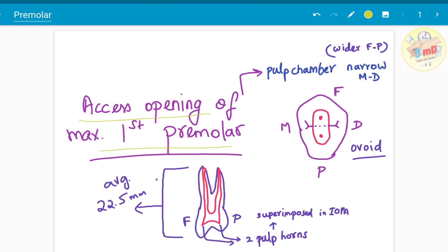The access opening of the maxillary first molar begins with locating the canals. One is located facially, that is buccally and another palatally. The access cavity is ovoid shaped. The pulp chamber is narrow in the mesiodistal direction and wider in the faciopalatal direction, in contrast to the G.V.